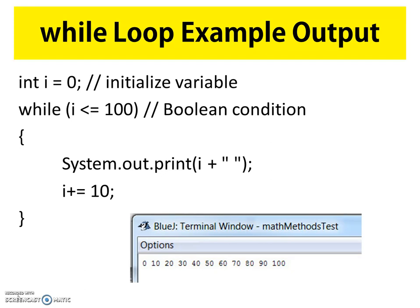So the output would be: 0, 10, 20, 30, 40, 50, 60, 70, 80, 90, and 100 — with a space in between each value — all the values printed on one line.